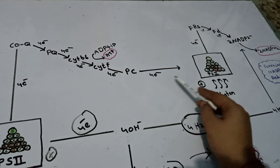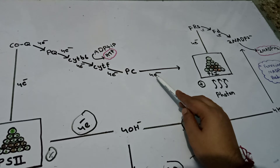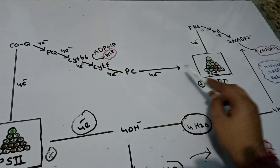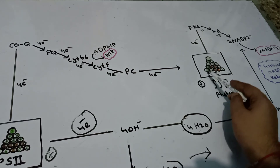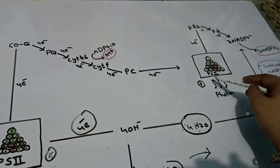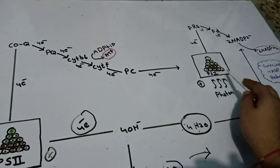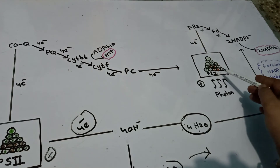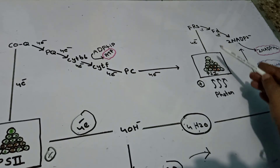Photosystem 1 then receives an electron from Plastocyanin, which brings it back to a neutral state. This receiving of electrons prevents Photosystem 1 from photo-oxidation.